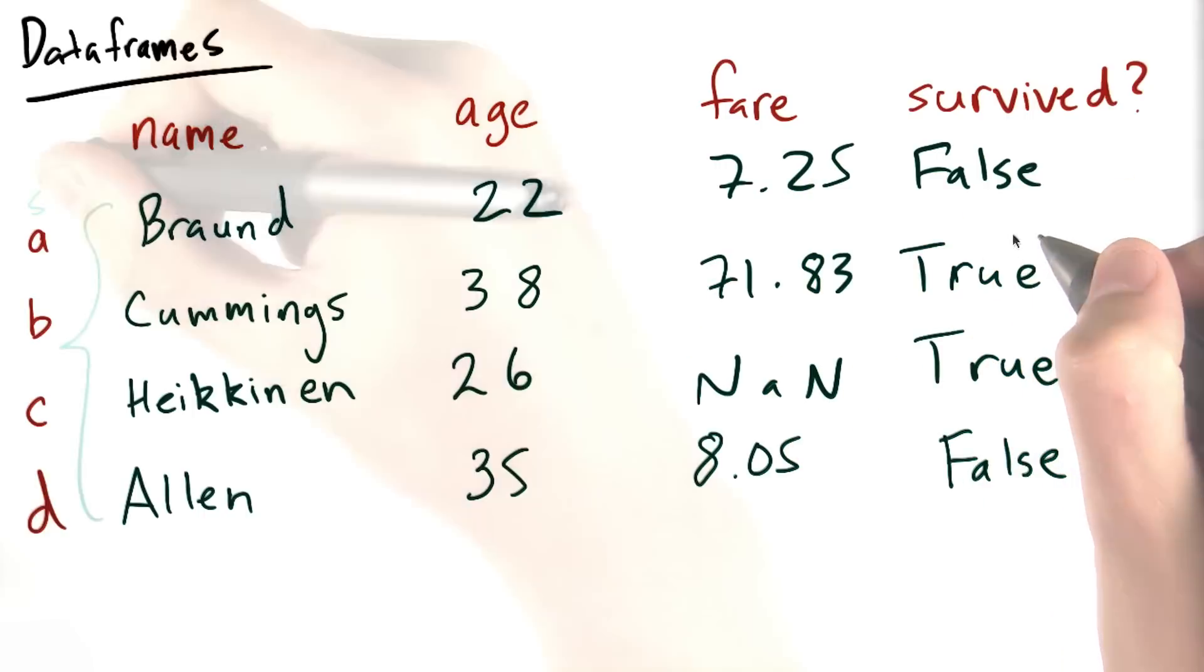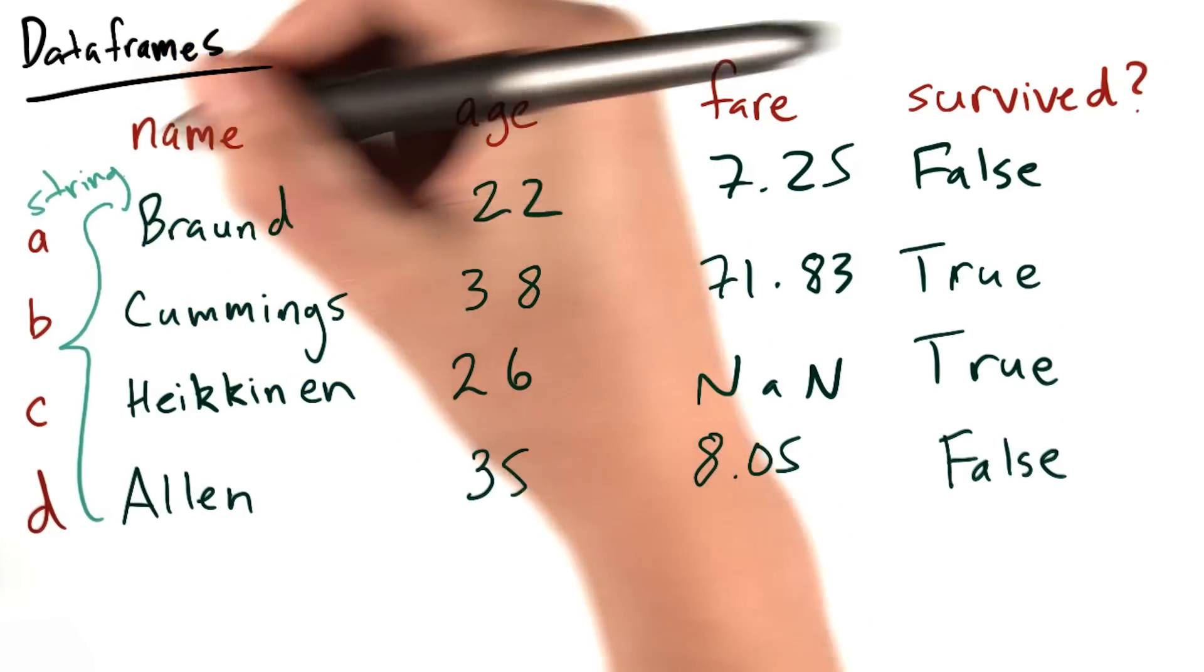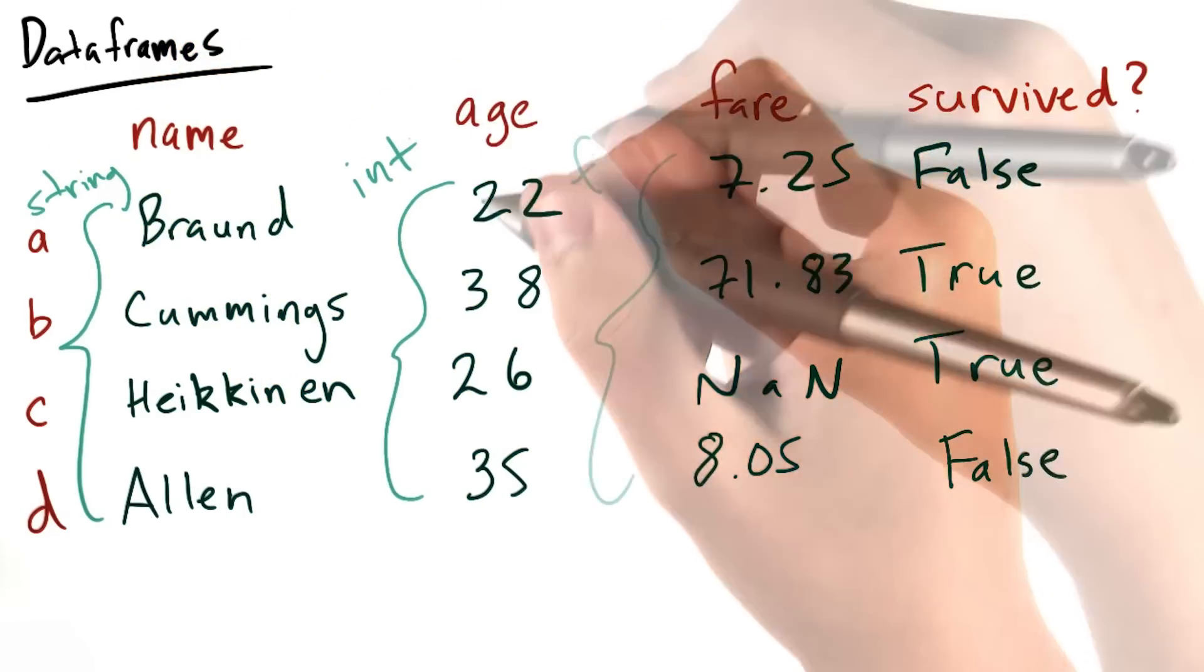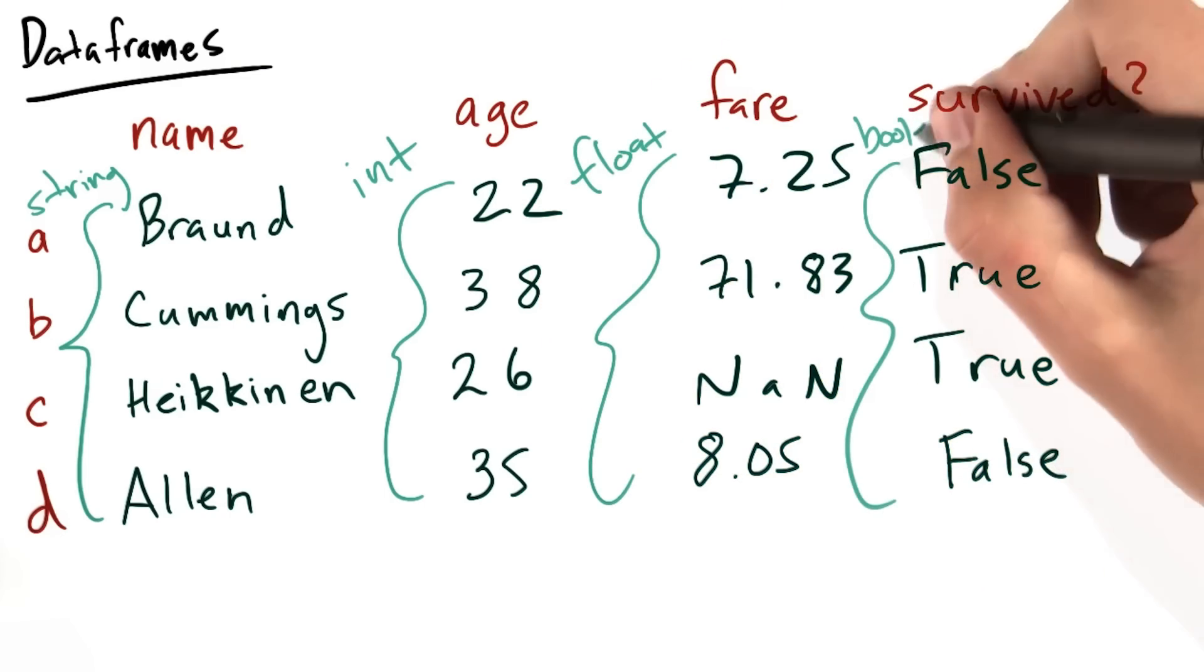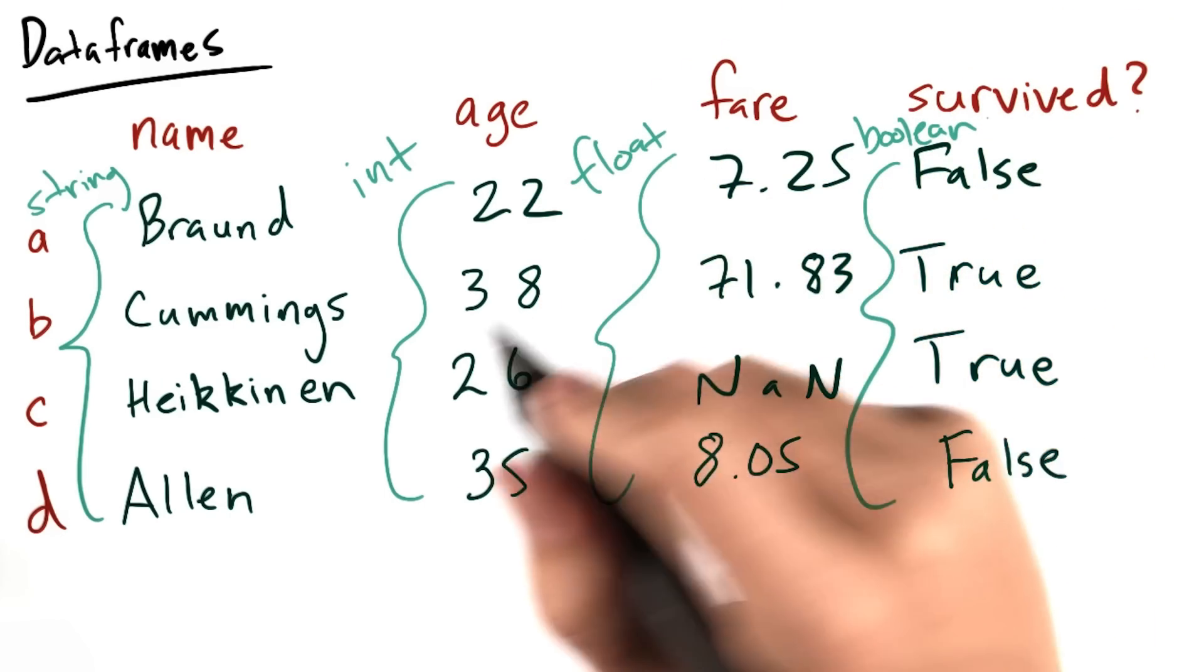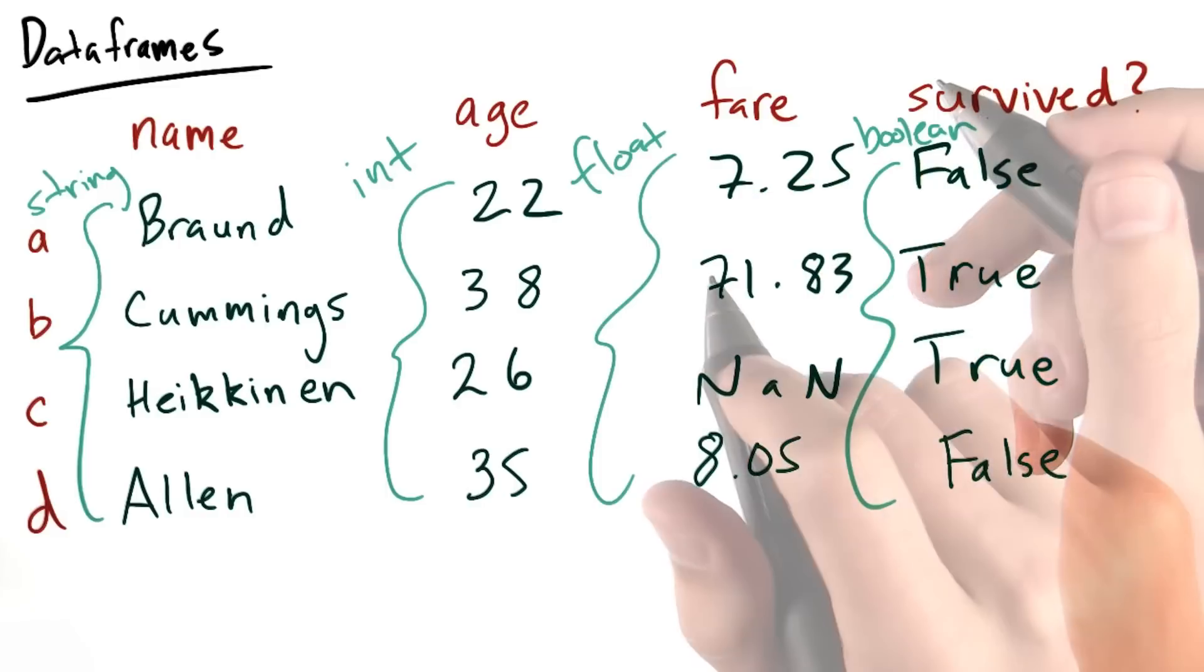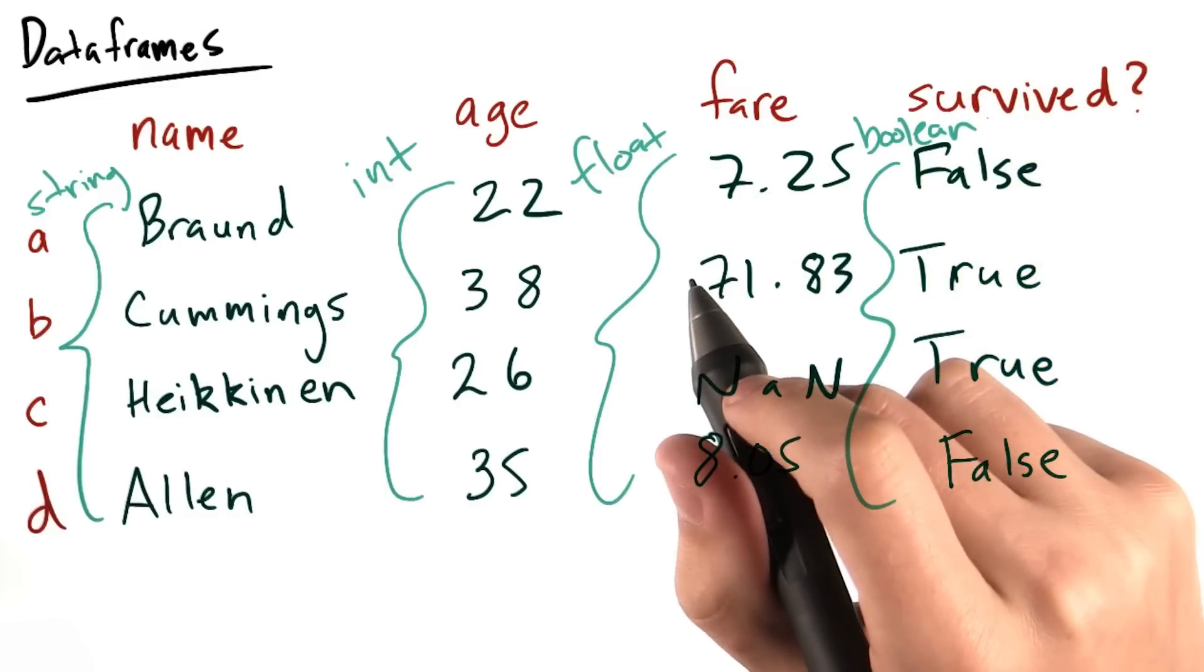For example, types like string, int, float, or boolean. You can think of a data frame as being similar to an Excel spreadsheet. We'll talk about making data frames in a second.